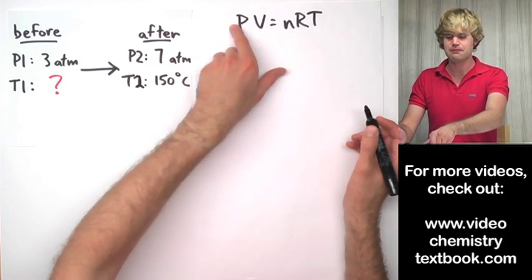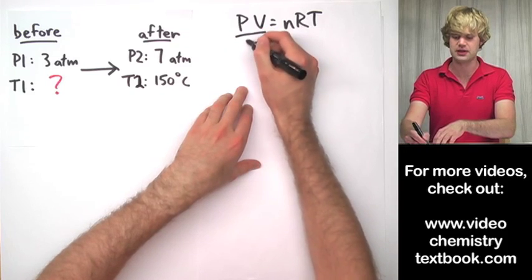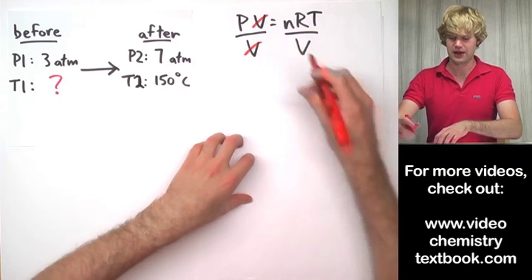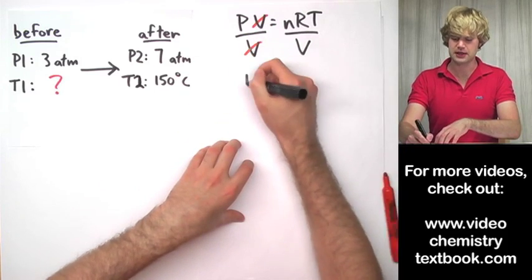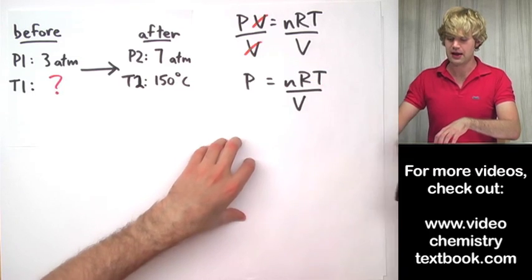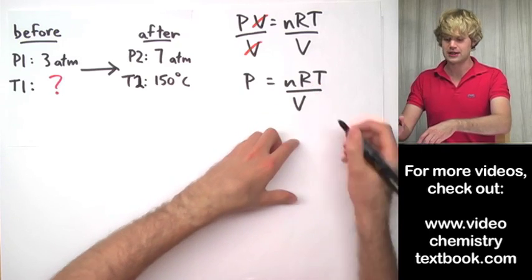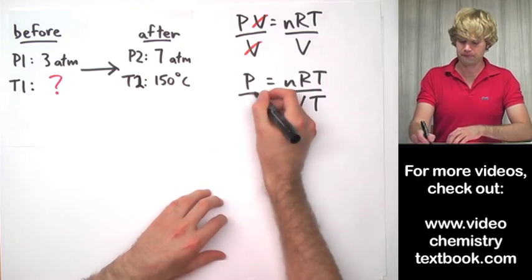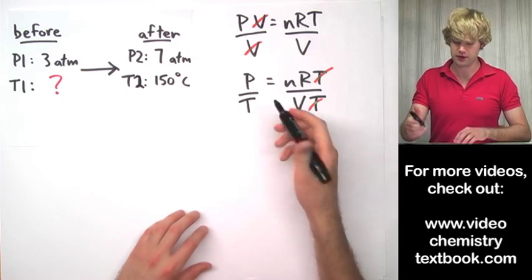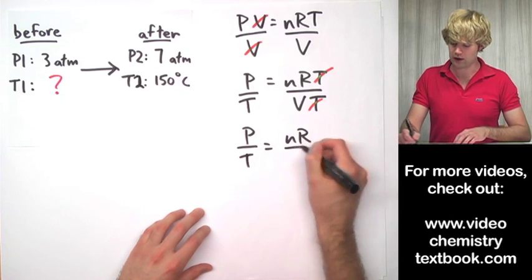It doesn't matter which side it is. So pressure and temperature. To get P and T by themselves, I'll first divide both sides by V here, and then V over V will cancel out. So now I have P equals nRT divided by V. And I want to get T to the other side of the equation so it can join P. So I'll divide both sides by T. And now T over T cancels out and I'm left with P over T equals nR over V.